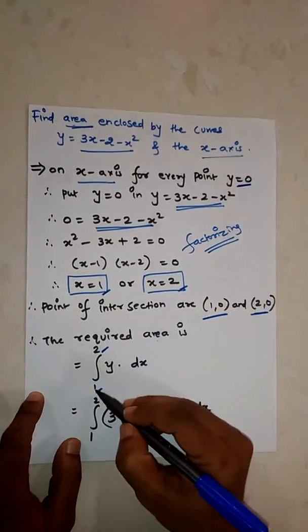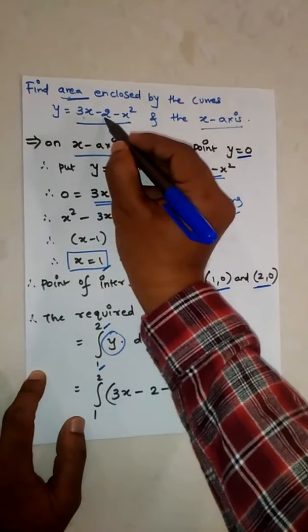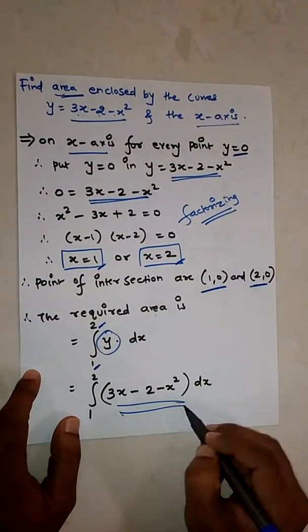...from limit 1 to 2, y dx. Value of y is 3x minus 2 minus x square.